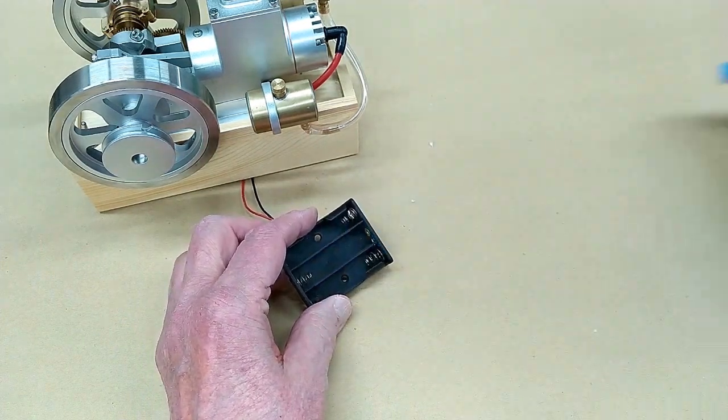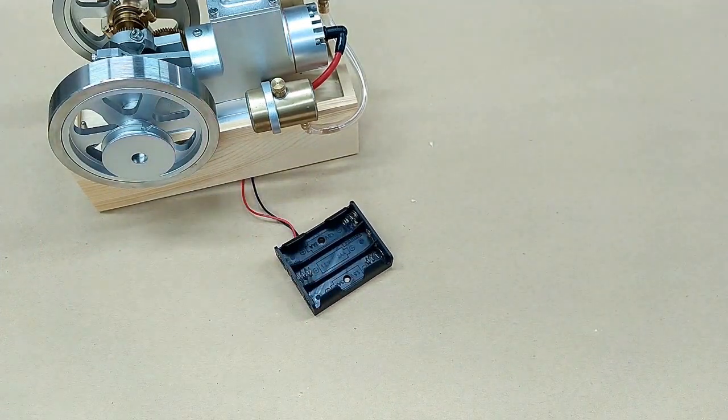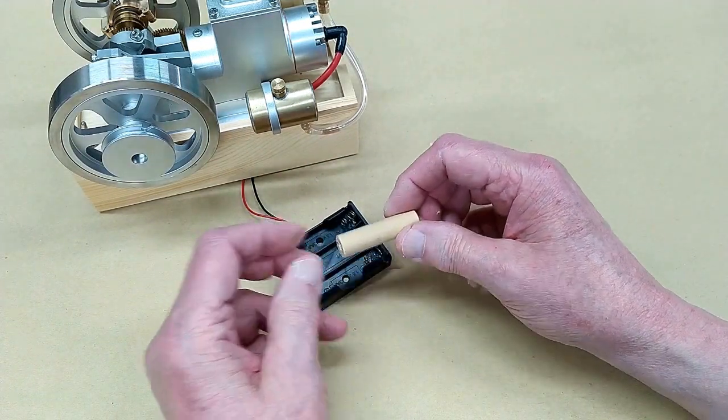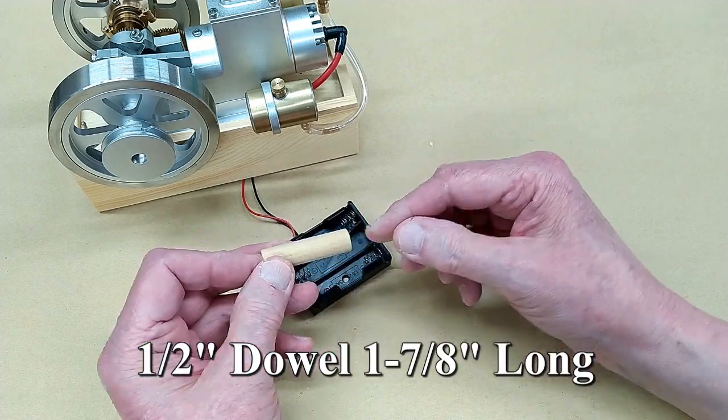Now, that's if you have access to a 3D printer. If you do not, you can take a half inch wood dowel and cut this to one and seven eighths inches, which is about 48 millimeter.